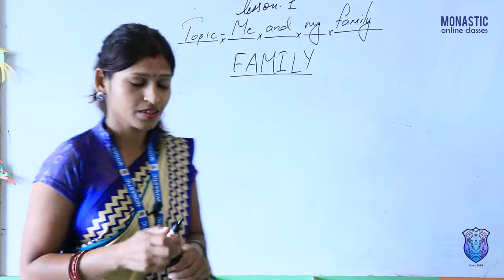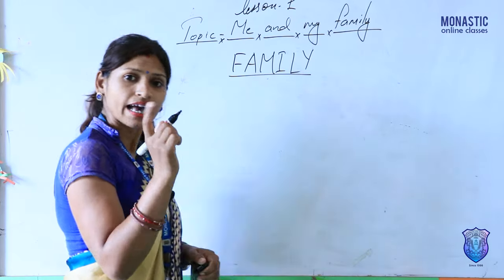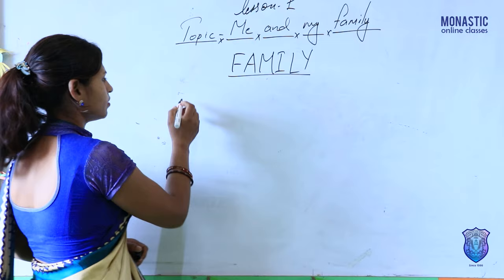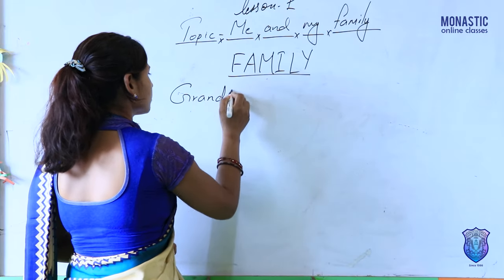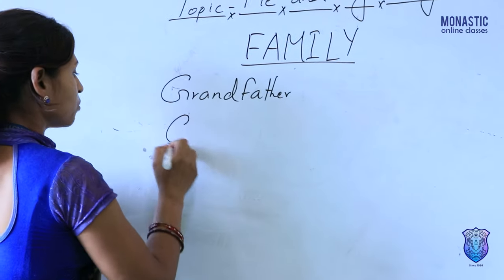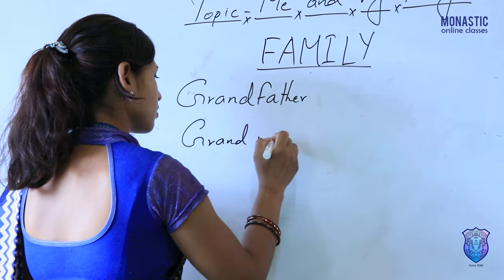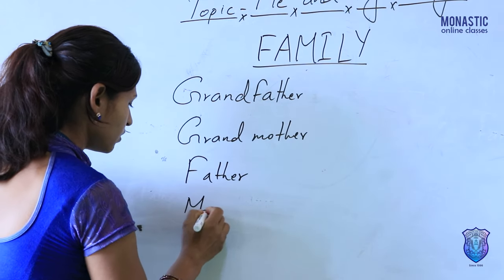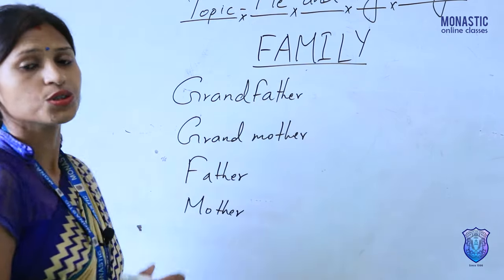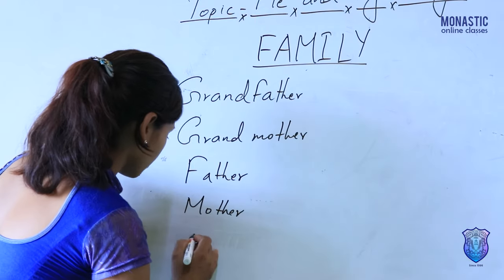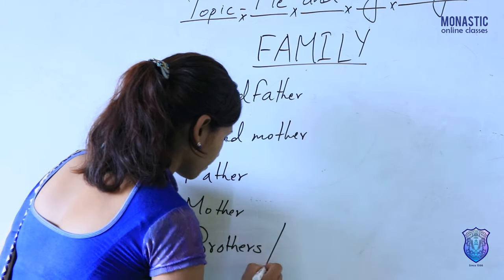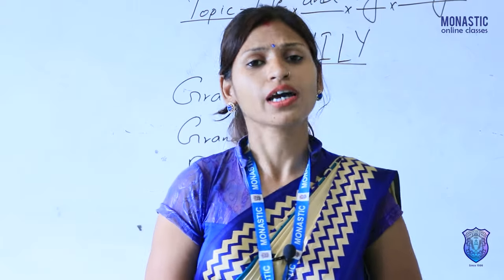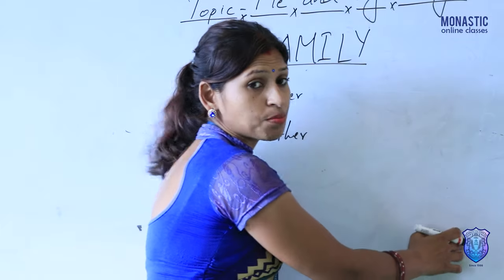Who is the head of your family? In our family, there is an older person whose name you say first — he is the head of your family. The order is: grandfather, then grandmother, then father, mother, and then your brothers or sisters. If you have two or three siblings, you write their names respectively.